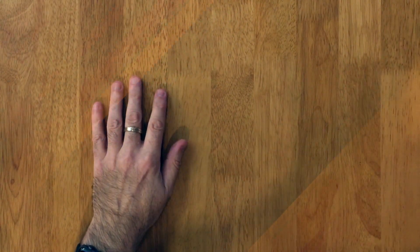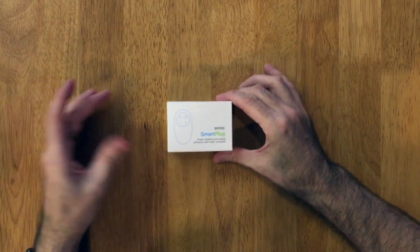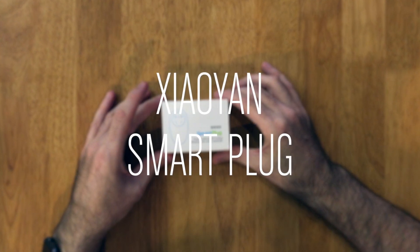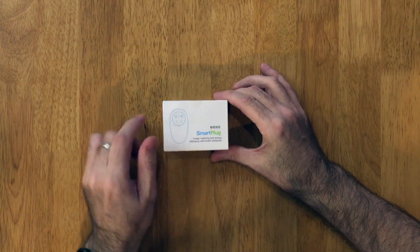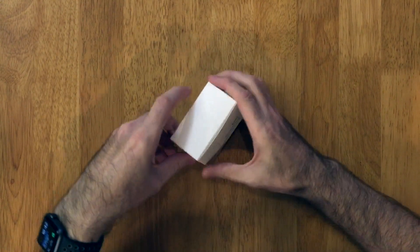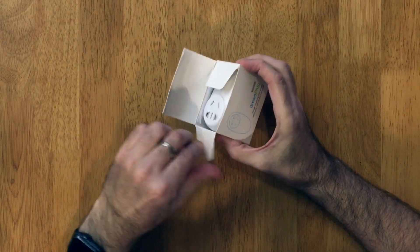On to number three, the Xiaoyan smart plug. The first thing you'll probably notice about this smart plug is that it's got Chinese pins, so if you're in New Zealand, Australia, or China, it's going to be of use to you.